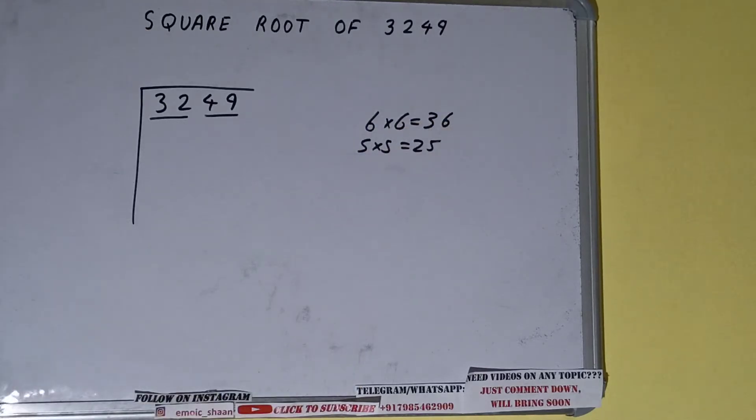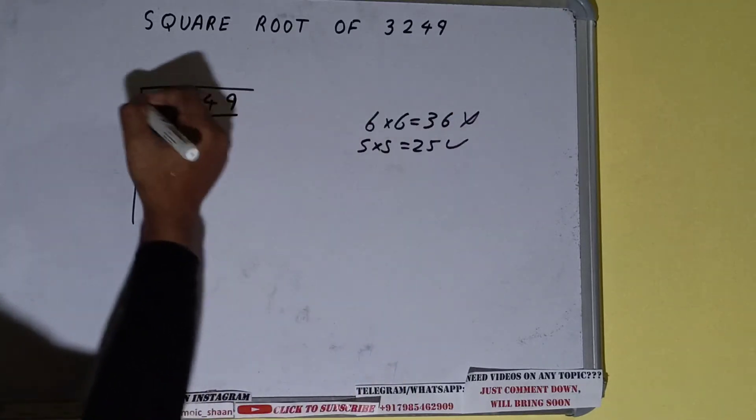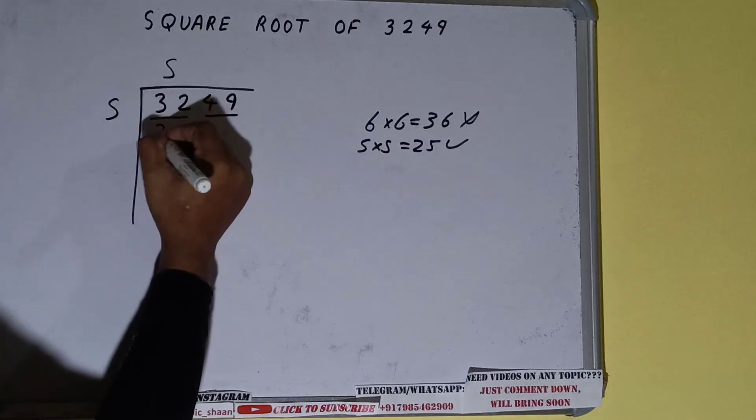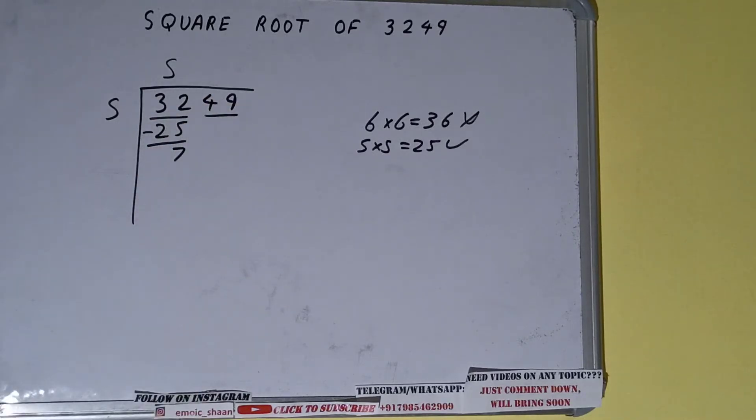Now 36 we cannot use because it is greater than 32, so we'll be using 25. So 5 here and 5 here, 25 subtract, and 7 will be left. Now we did 5 into 5, so add both.